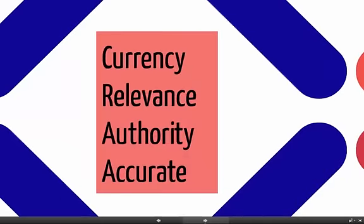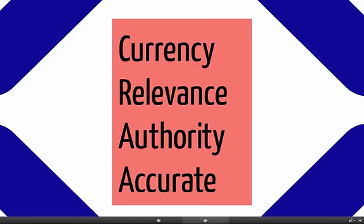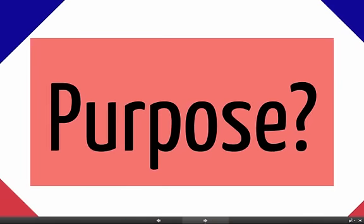Knowing the currency, relevance, authority, and accuracy of a source is about critically evaluating the validity and reliability of sources. However, knowing the purpose of the source is the writer's tool for knowing how to use the source in his or her writing. Knowing the purpose is about using sources rhetorically for your own purpose and objectives as the writer.